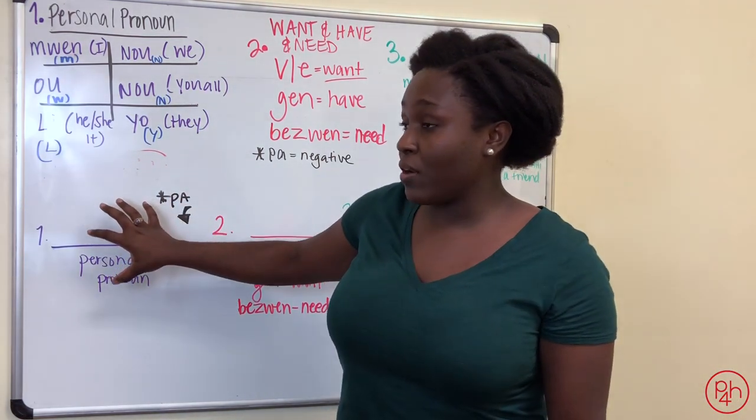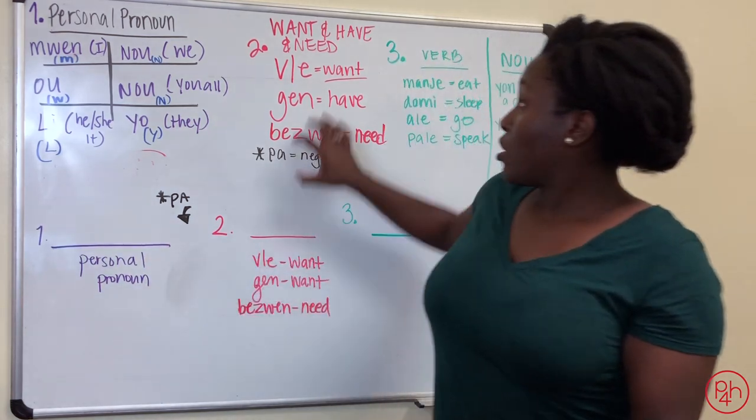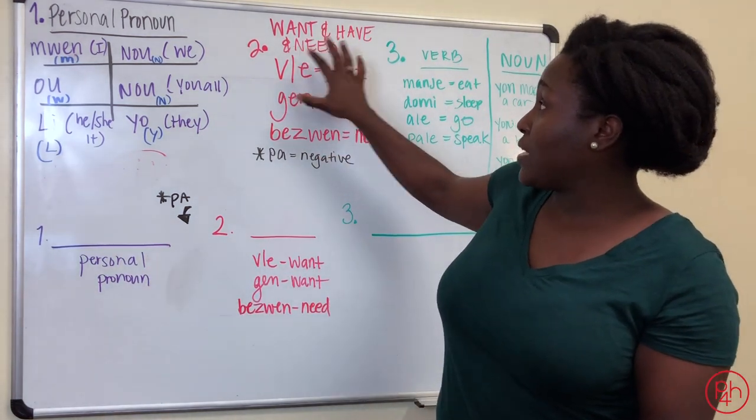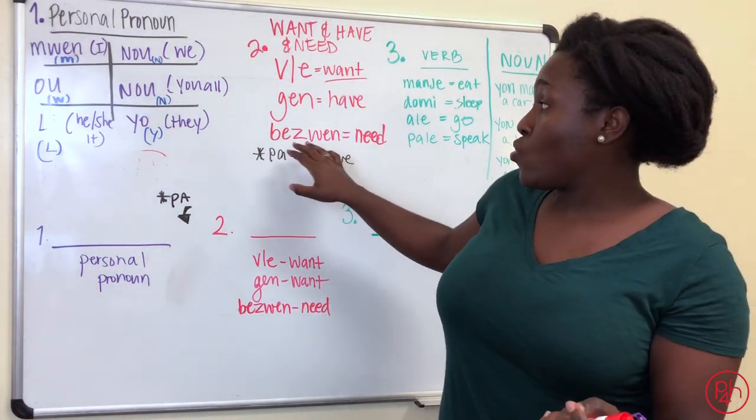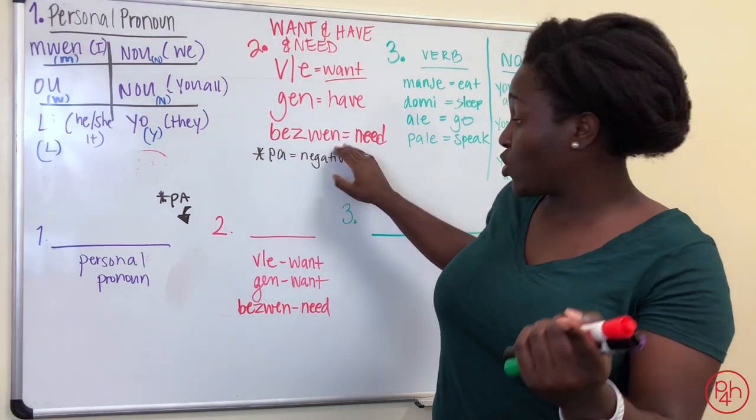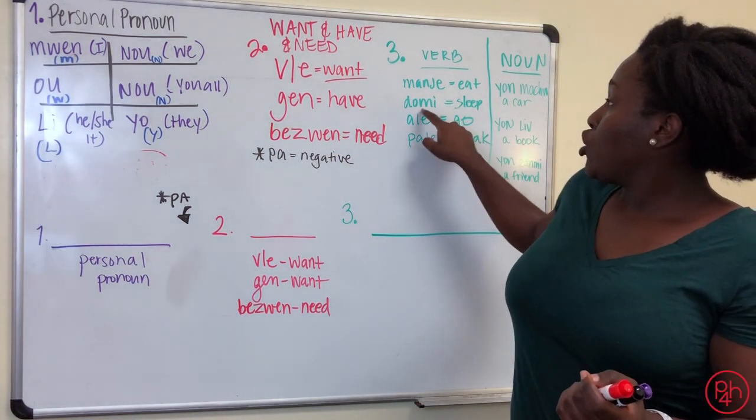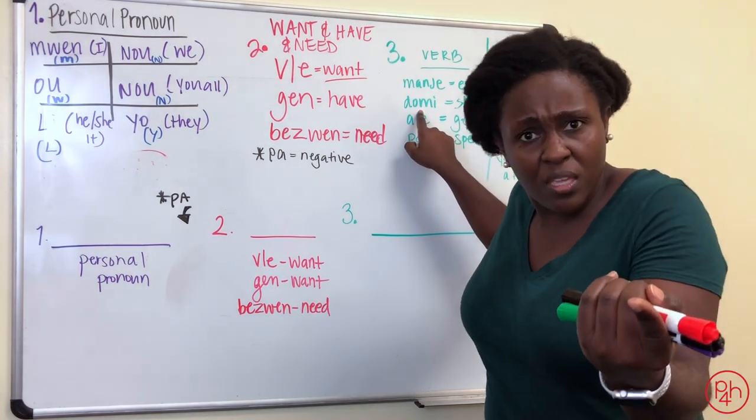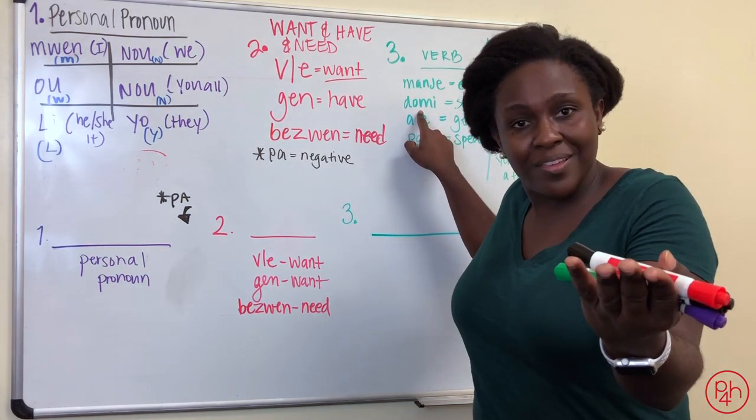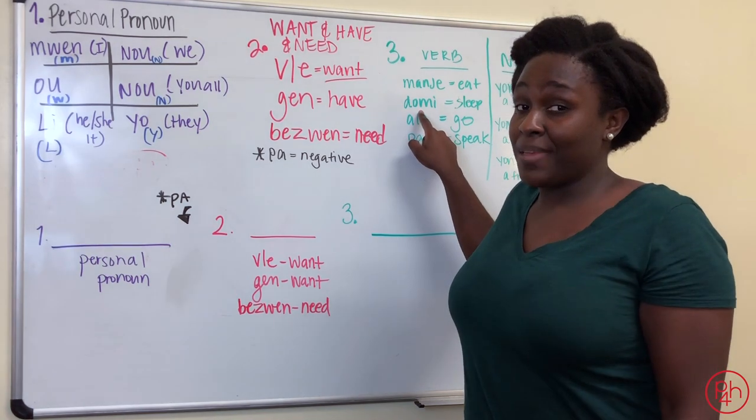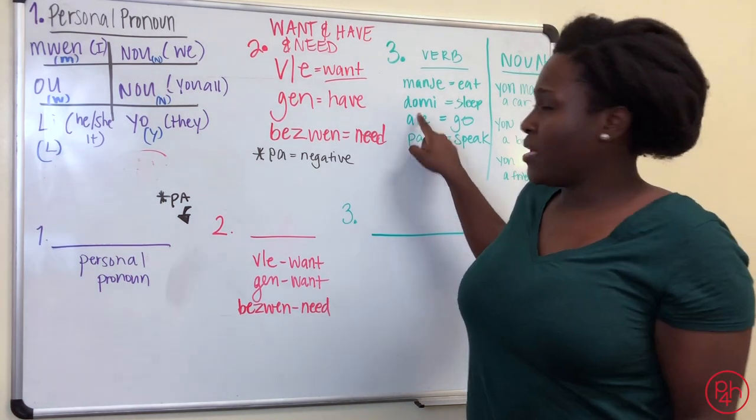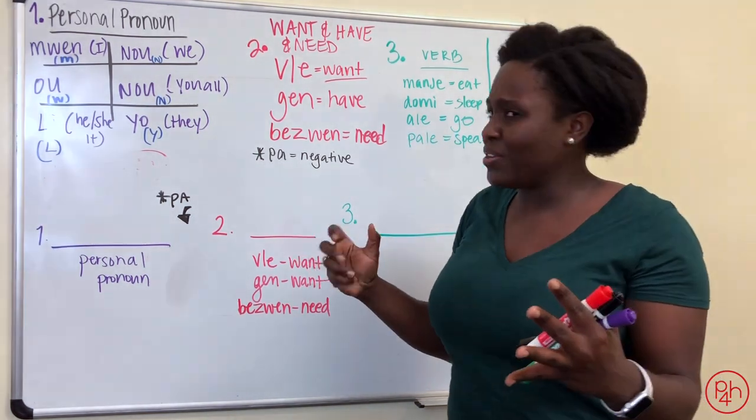Start off with a personal pronoun. U. Go on to whether you want, have, or need. Let's say, u bezwen. U bezwen. Let's say, dormi. U bezwen dormi? U bezwen dormi? You need to sleep? Do you need to sleep? Very, very simple creating your own sentences.